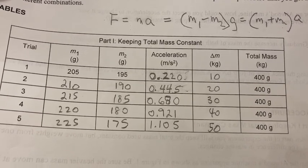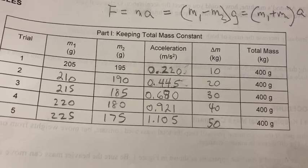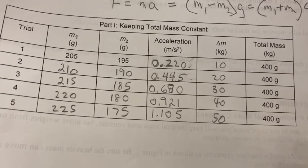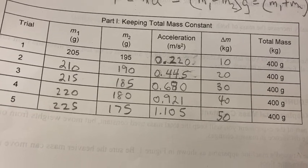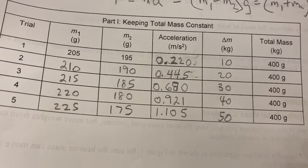For the first part, we have a difference of 10 grams, the acceleration is 0.220. For 20 grams, the acceleration is 0.445.